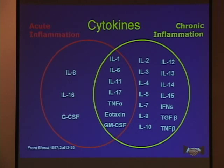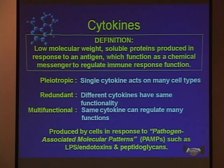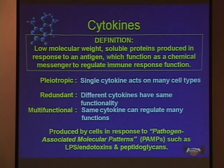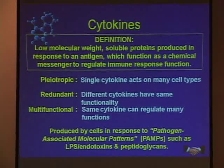Classes of cytokines — there are some associated with acute inflammation, some with chronic, and they're classified broadly. There's not one or five; there are dozens and dozens, and they keep finding them. We're going to talk about some specific ones that keep popping up in periodontics and general inflammation. The definition of a cytokine is a low molecular weight soluble protein made in response to an antigen, which functions as a chemical messenger and regulates the immune response.